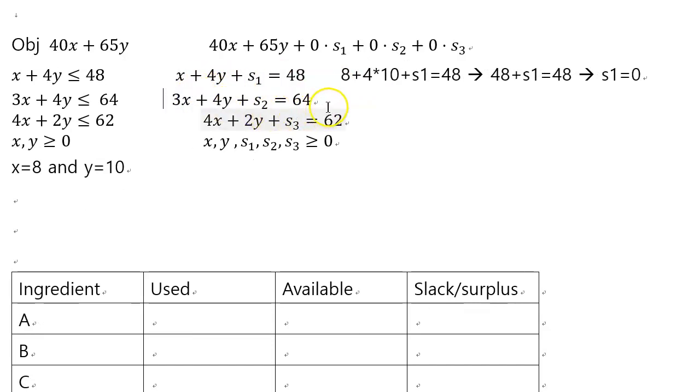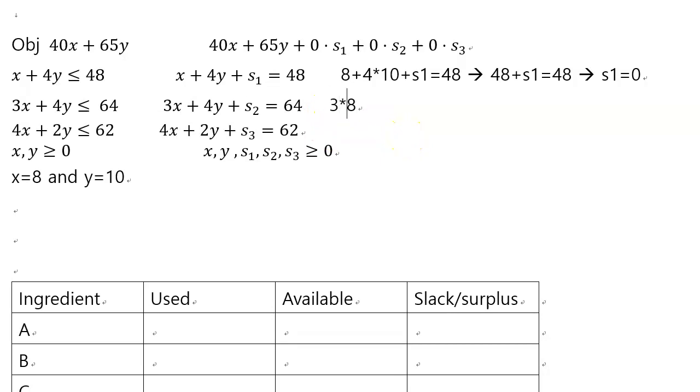And you do the same for the other ones. Just use the standard form to figure out the values of s1, s2, s3. So here's 3 times 8 plus 4 times 10 plus s2 is equal to 64. So that you have 24 plus 40, that's 64 plus s2 equals 64, so s2 is 0.